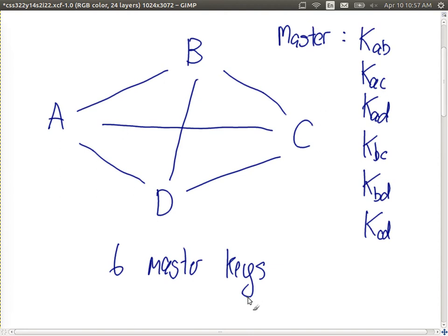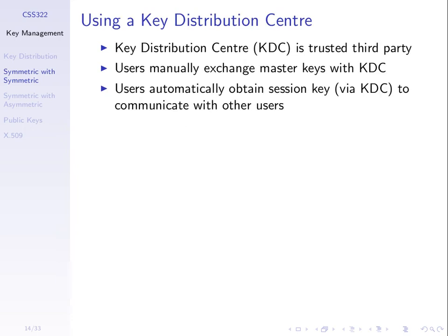To overcome this problem, we use a centralized scheme with a Key Distribution Center (KDC) — a trusted third party, a special server that distributes keys to users. The KDC knows the keys of all users. We first manually exchange a master key between each user and the KDC. Then when a pair of users like A and B want to communicate, they exchange a session key automatically, making use of the KDC.